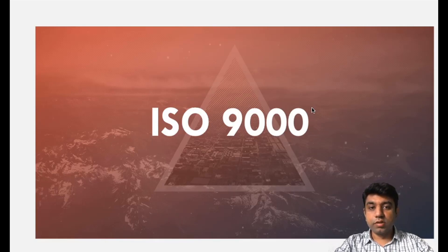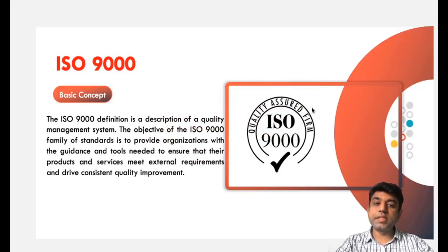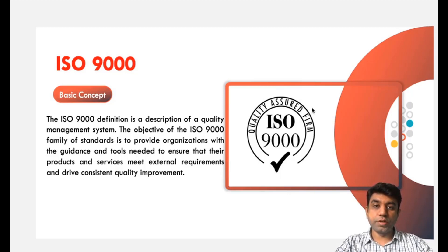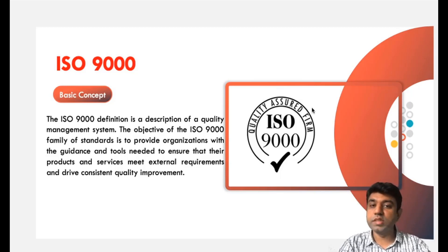The basic concept of ISO 9000 is that it is a description of the quality management system. The objective of the ISO 9000 family of standards is to provide organizations with guidance — specifically the tools needed to ensure that the products and services developed by a particular organization are meeting external requirements, meaning the requirements of the customer. It also drives continuous quality improvement.